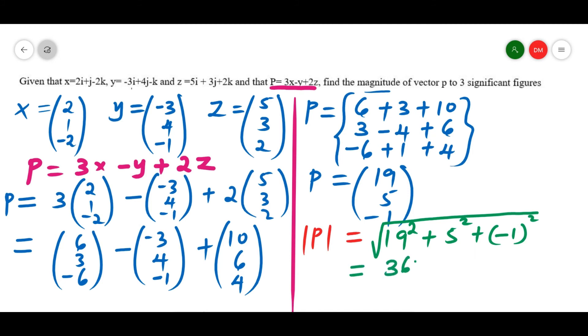This will give 361 plus 25 plus 1, which gives the square root of 387. These to three significant figures will give 19.7 as the solution. So that is how we're supposed to calculate the magnitude of the vectors.